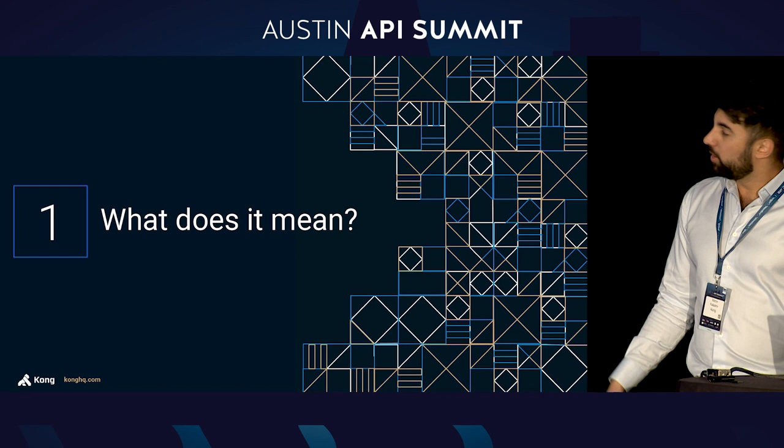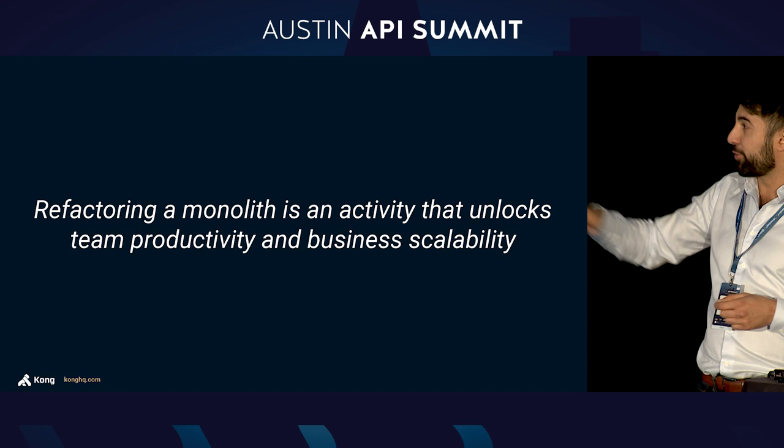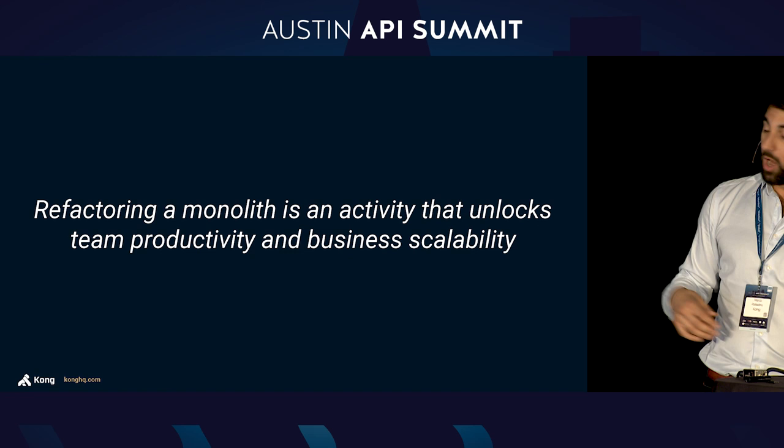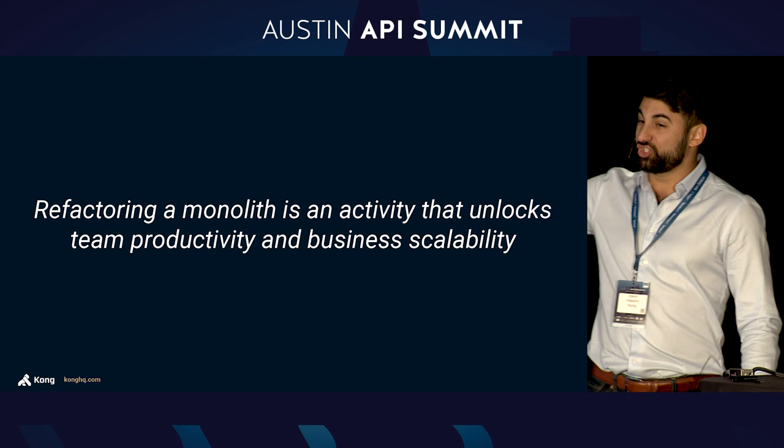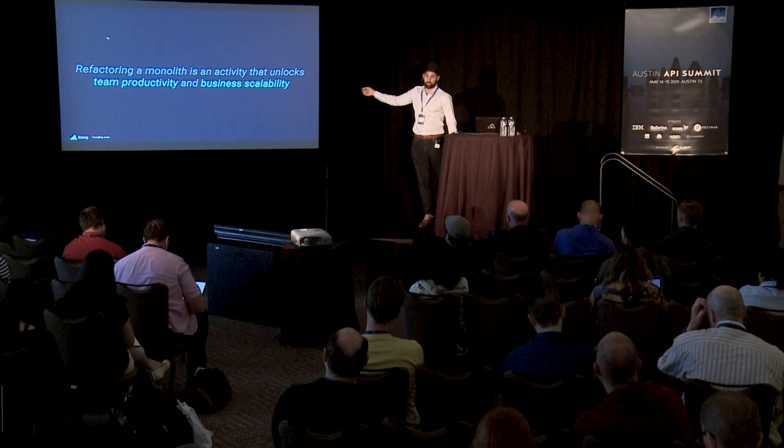Before we look at the technical aspects of this transition — what does it even mean to modernize our systems? Why are we doing it? I really like this definition: refactoring the monolith is an activity that unlocks team productivity and business scalability. The keywords are team productivity and business scalability. Anything that doesn't achieve these goals becomes quickly an academic project. Microservices, although we're hearing a lot about them these days, are not a new concept — companies like Amazon, Netflix, and Google did that transition a long time ago.